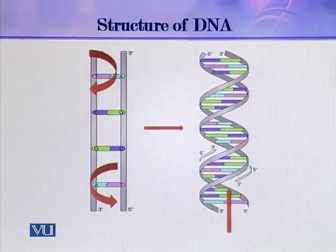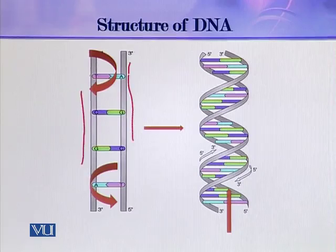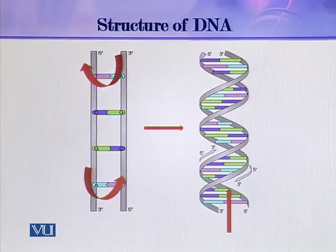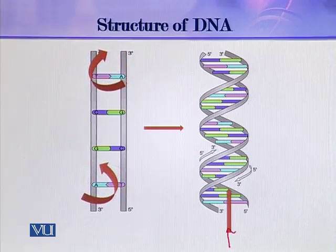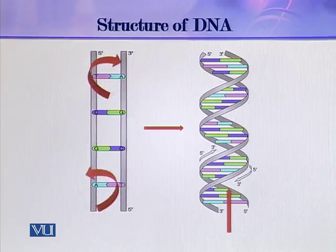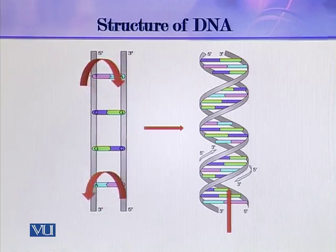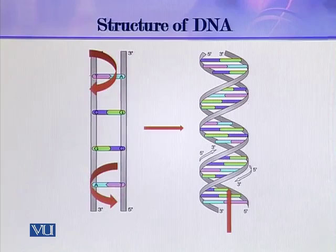As you can see in this picture, the two polynucleotide strands are joined together and they are wound around the axis. This is the axis, and they form a double helical structure. This is the double structure of the DNA molecule.